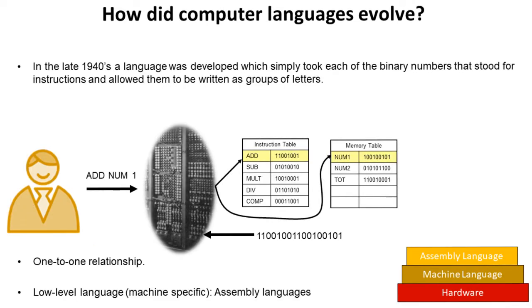In the late 1940s a language was developed which simply took each of the binary numbers that stood for instructions and addresses and allowed them to be written instead as groups of letters. Now this is the birth of the assembly language. There's a direct one-to-one relationship between assembly language and machine code. In other words you supply a single line of assembly code and it is directly looked up and returns one line of executable machine language.